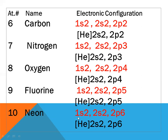Neon, atomic number ten: configuration 1s2 2s2 2p6. Instead of 1s2 we place helium, so the remaining configuration is [He] 2s2 2p6.